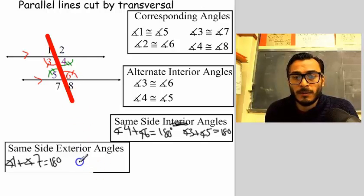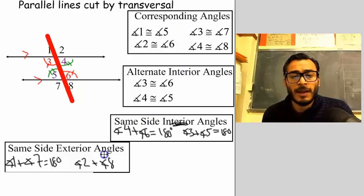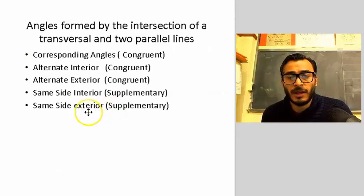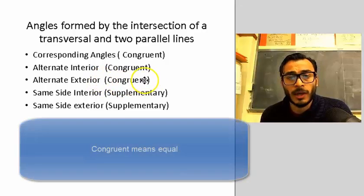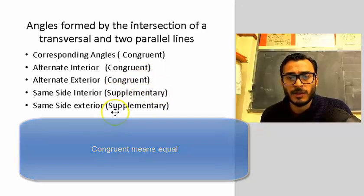So you need to know corresponding angles, alternate interior angles, same side interior angles, and same side exterior angles. To summarize: the angles formed by the intersection of a transversal and two parallel lines include corresponding angles, alternate interior angles, alternate exterior angles, same side interior, and same side exterior.